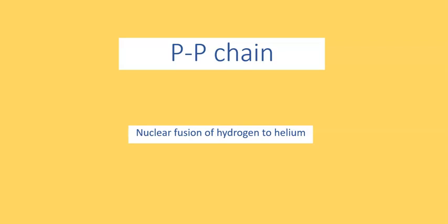The proton-proton chain, PP chain for short, is a nuclear fusion reaction thought to be the primary source of power occurring at the core of the Sun.